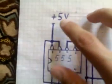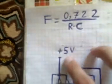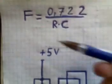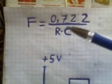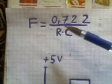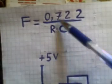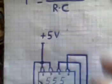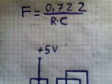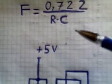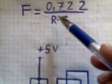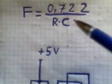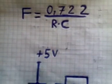This is our frequency of output voltage. The frequency equals 1 divided by R times C. We can see that when we increase C or R, our frequency decreases.